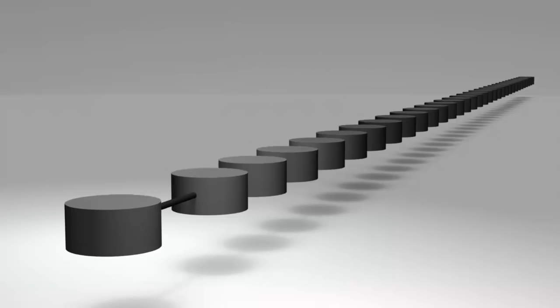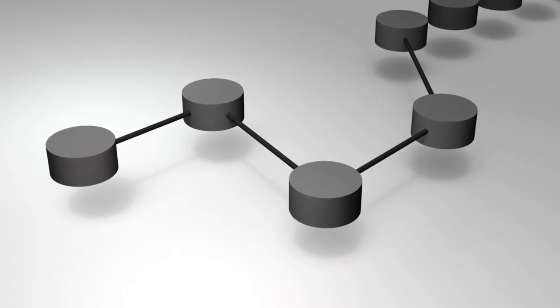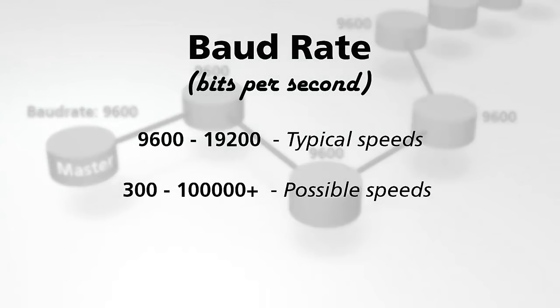The speed that Modbus messages are sent at is referred to as the baud rate, or bits per second. All devices on an RTU network must use the same baud rate. Different devices support different transmission speeds, but between 9,600 and 19,200 bits per second is a typical range. Modbus modules can be configured from as low as 300 to as high as over 100,000.